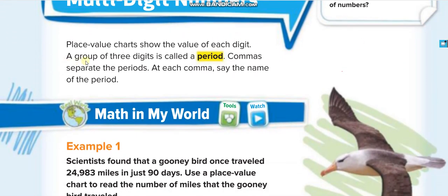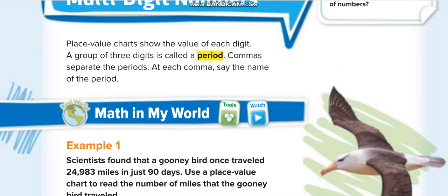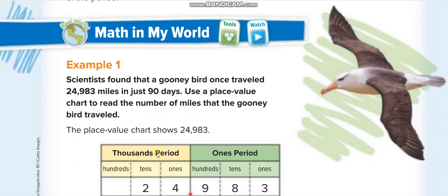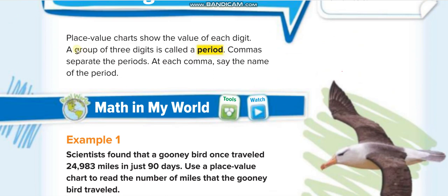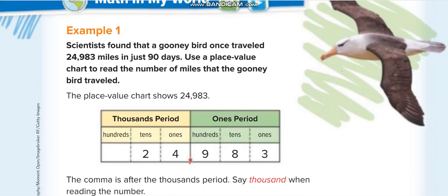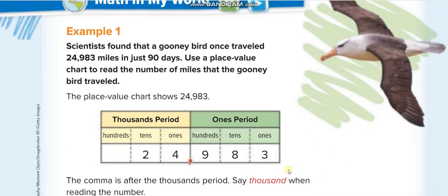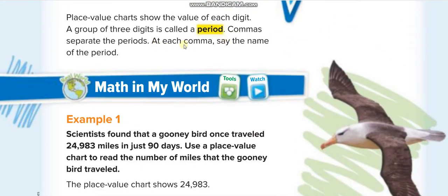The most important thing for today's lesson is this: a group of three digits is called a period. We have three periods — the ones period, the thousands period, and the millions period. We have more, but we are only taking three for now. Commas are used to separate the periods, and before starting the next period we place a comma.